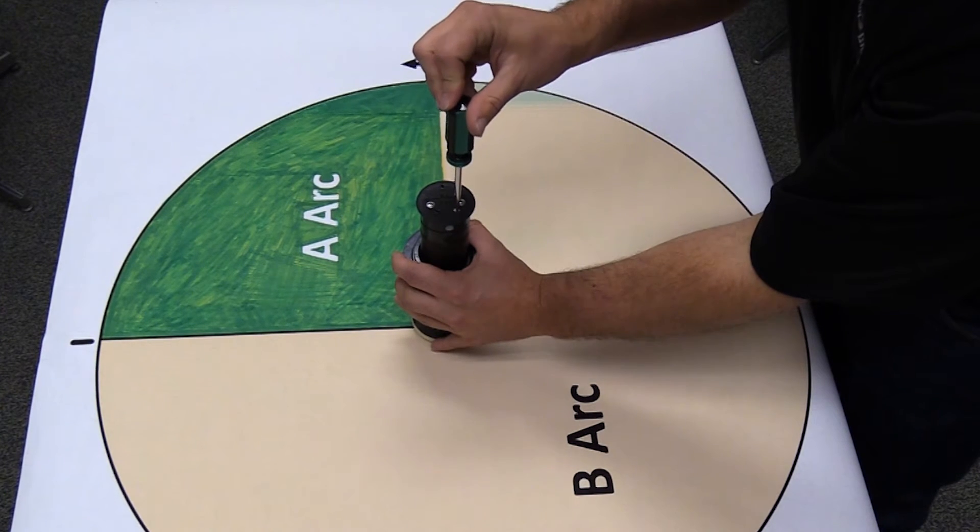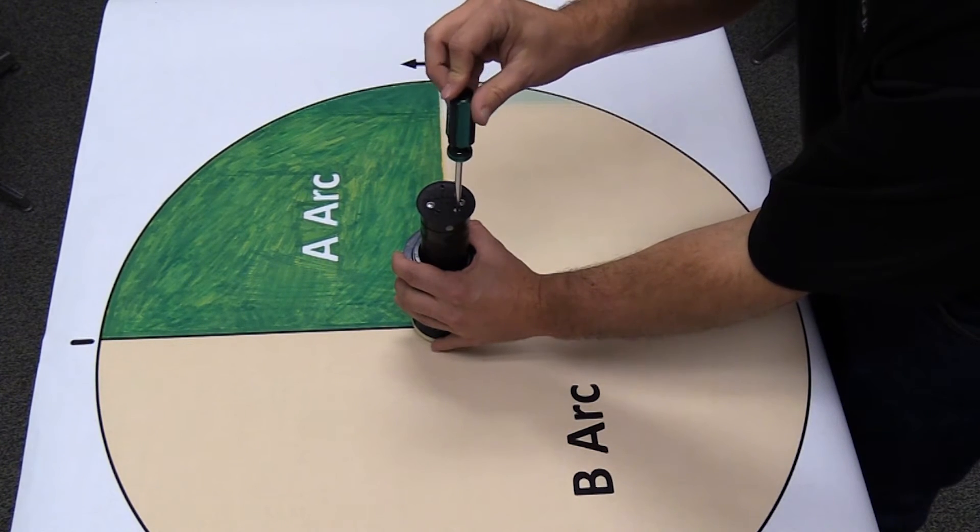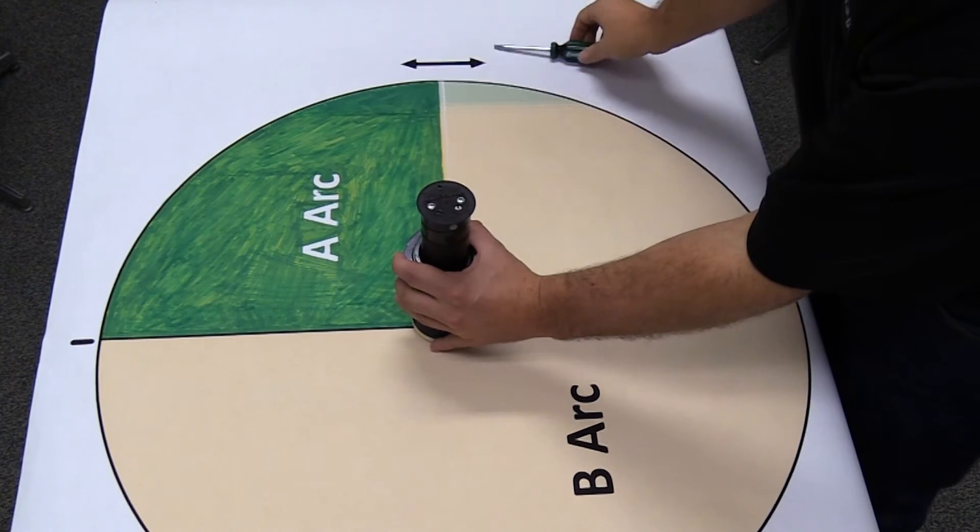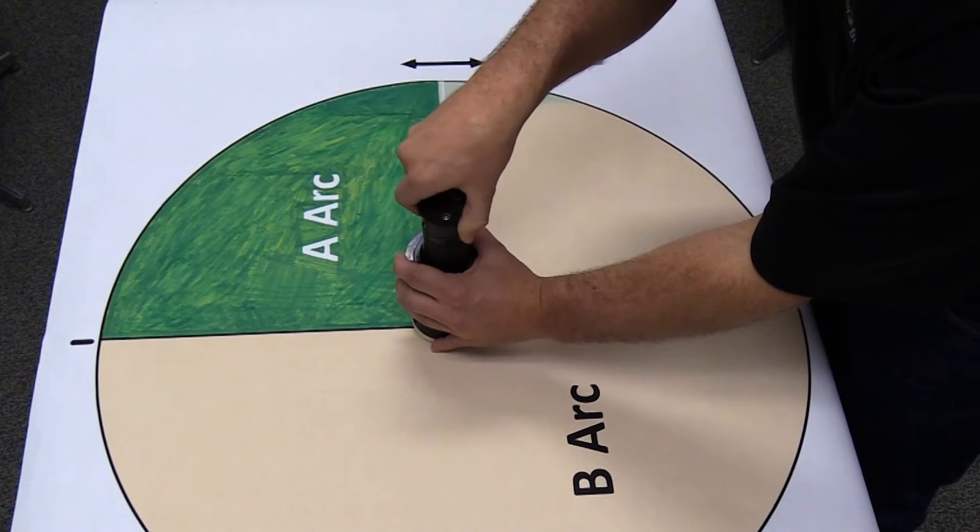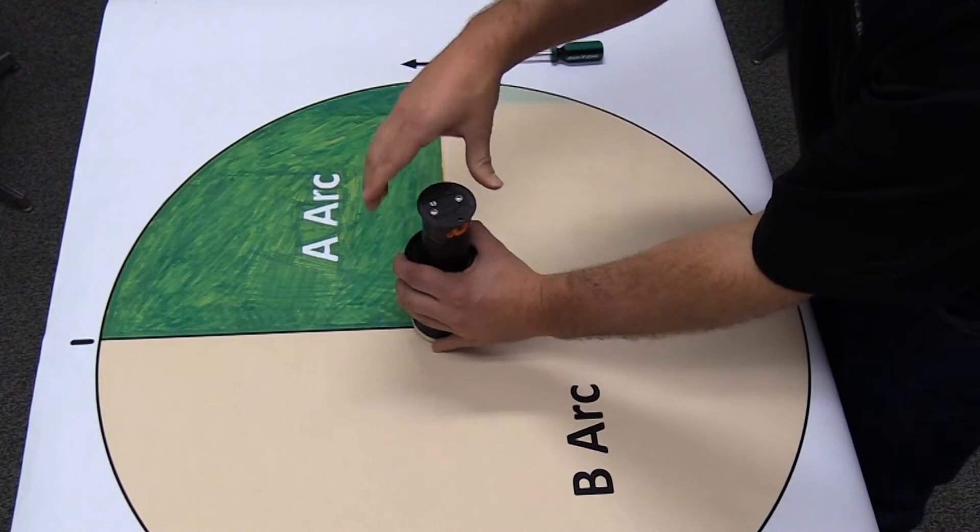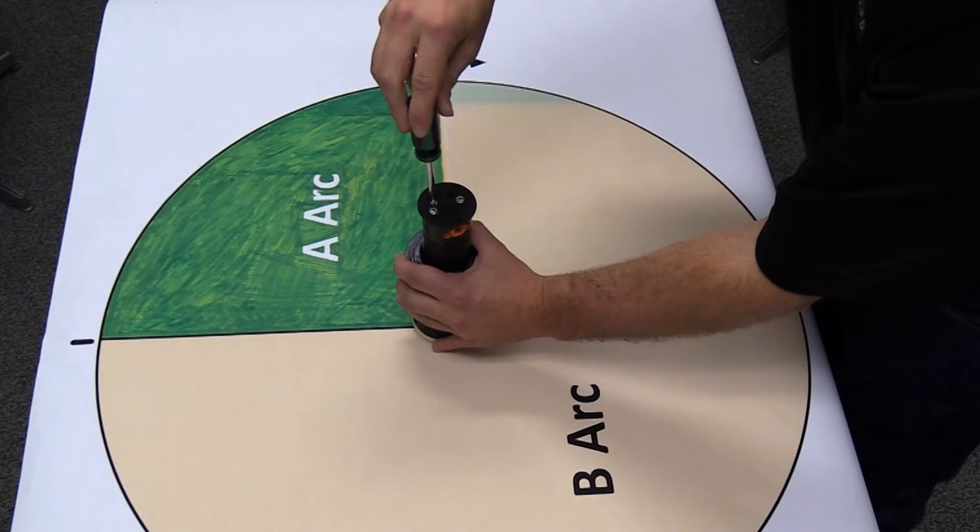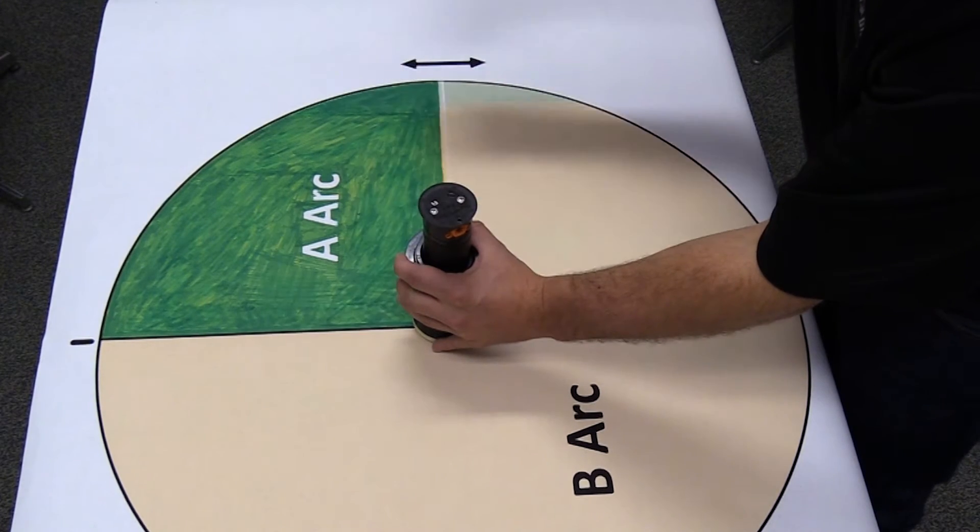To change to the B arc, rotate the full circle part circle adjustment stem counterclockwise to its full circle mode. Rotate the nozzle around until it is within the B arc, and then adjust the full circle part circle adjustment stem back to part circle mode.